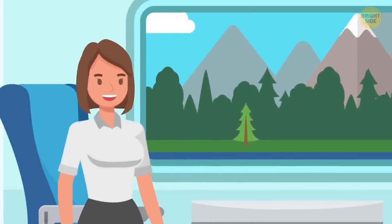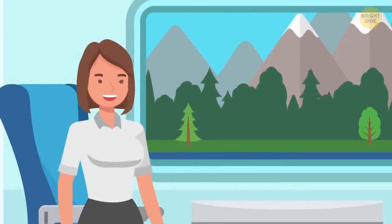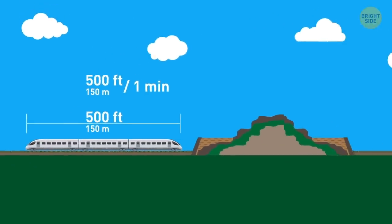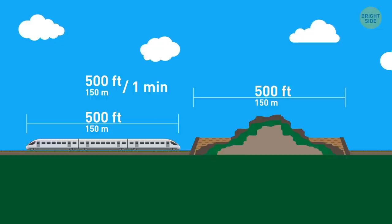Annabeth is going by train to visit her best friend, Brooke. The train is five hundred feet long, and it's moving at a speed of five hundred feet a minute. And it's now traveling through a five hundred foot long tunnel. How long will it take for the train to go through the tunnel?